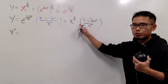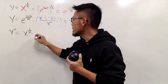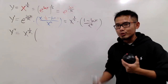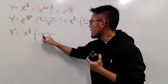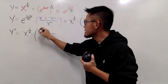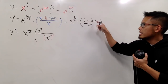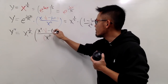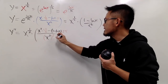Notice that y prime is a product, so we have to use the product rule. Put down the first function and multiply by the derivative of the second. The derivative of the second factor requires the quotient rule. So we square the denominator — that's x squared squared. Then put down the denominator x squared times the derivative of the top: derivative of 1 is 0, derivative of negative ln x is negative 1 over x. Then minus the top function 1 minus ln x, multiplied by the derivative of the bottom, which is 2x.